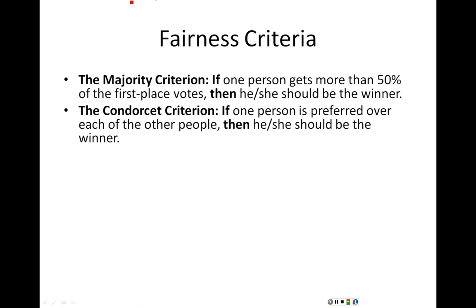Another criteria is called the Condorcet criterion. The idea is that if one person is preferred over each of the other people, then that person should be the winner. We talked about this when we were looking for the Condorcet candidate — the one we called the most popular. We did those one-on-one elections, and if there was somebody that won every single one-on-one election against all the other candidates, that was the Condorcet candidate.